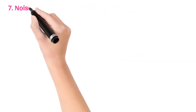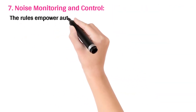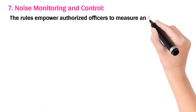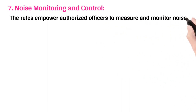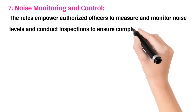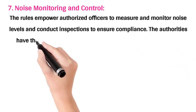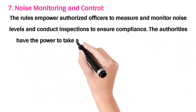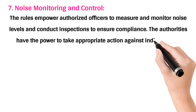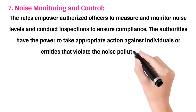7. Noise Monitoring and Control: The rules empower authorized officers to measure and monitor noise levels and conduct inspections to ensure compliance. The authorities have the power to take appropriate action against individuals or entities that violate the noise pollution rules.